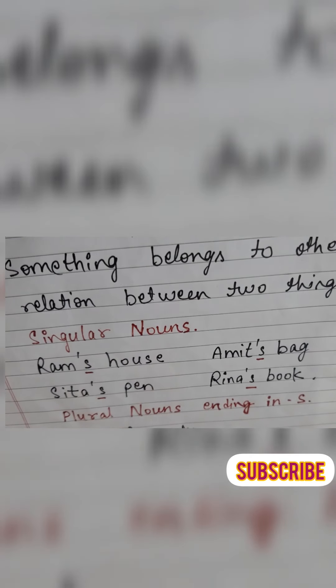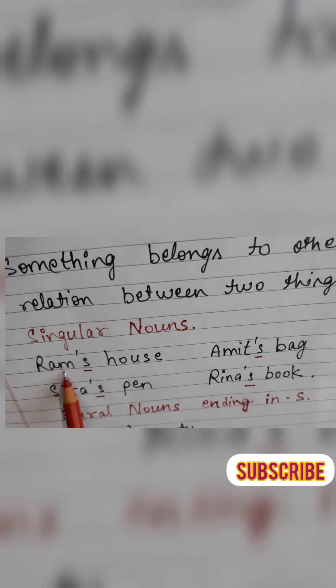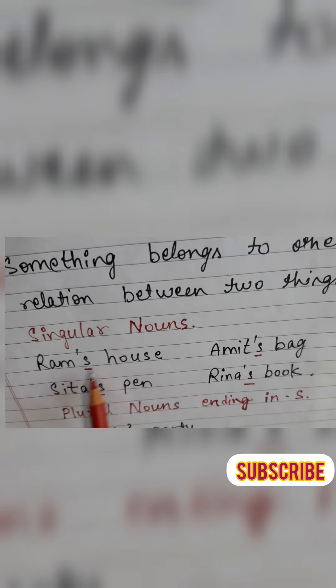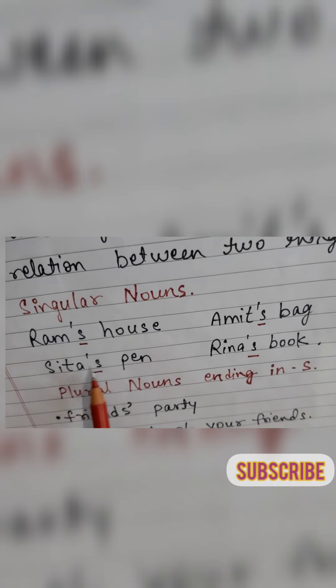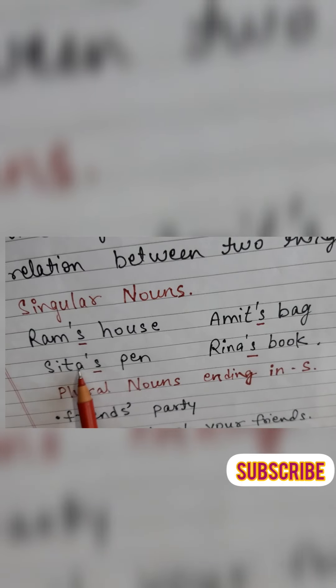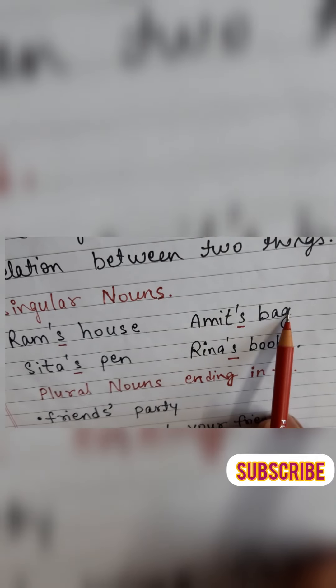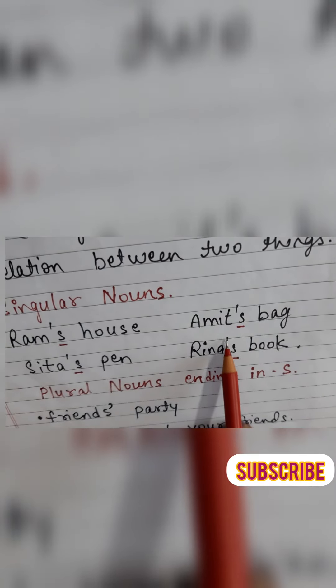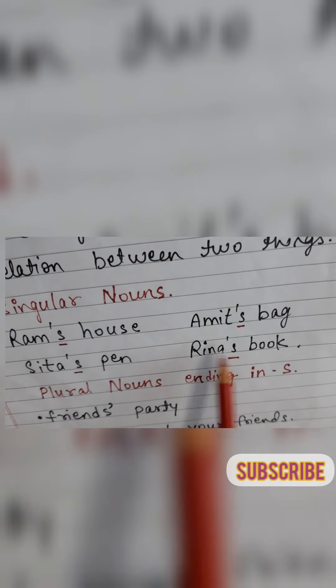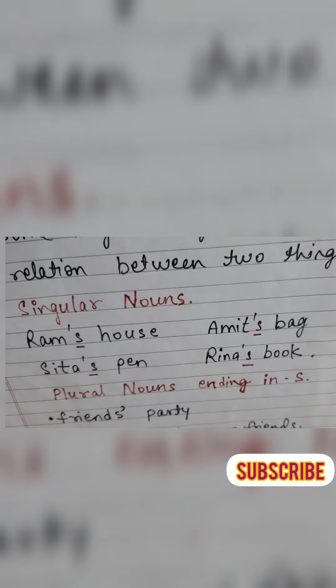In singular nouns, like if I want to say 'Ram ka ghar' (Ram's house), I will write Ram's house — we put an apostrophe and then S after Ram. For example: Ram's house, Sita's pen (Sita is a single girl, singular), Amit's bag (Amit is a single boy), Reena's book. In singular nouns we simply add an apostrophe and S.